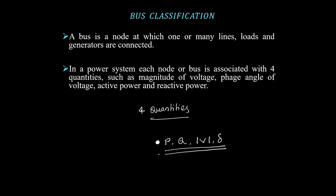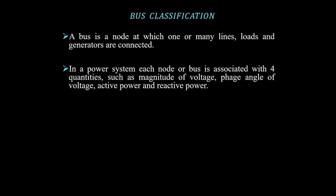Bus classification will also be done using these four quantities. Out of these four quantities, any two quantities will be specified at any bus. If you take n number of buses in the system, each bus will be specified with any two quantities out of these four — that may be either P and Q, or P and the magnitude of V. Two quantities will be known and two more quantities we need to find out. First we need to identify which bus the given bus is, then we will know which quantities we need to find out.